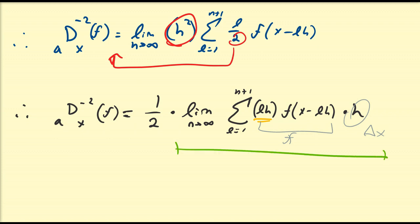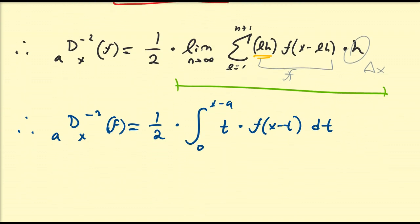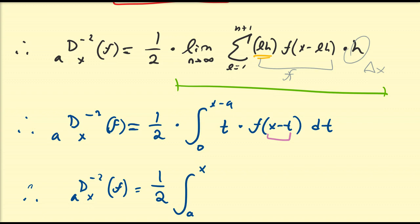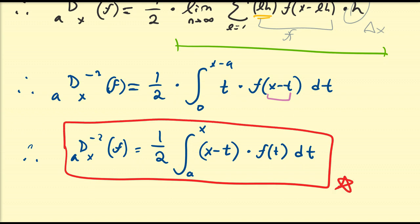So d_ax of negative 2 of f equals one-half times the integral from 0 to x minus a of t times f of x minus t dt — where lh corresponds to t. Performing the same u-substitution u equals x minus t, we get d_ax of minus 2 of f equal to one-half times the integral from a to x of x minus t times f(t) dt. That is my identity for the negative second derivative.